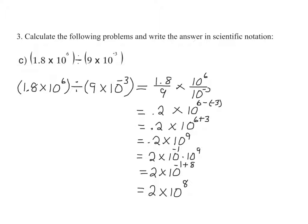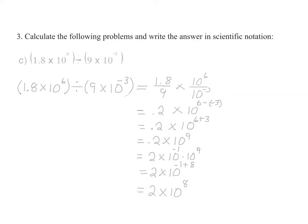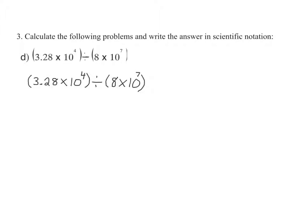Therefore, 1.8 times 10 to the sixth divided by 9 times 10 to the negative third is equal to 2 times 10 to the eighth. For d: 3.28 times 10 to the fourth divided by 8 times 10 to the seventh.